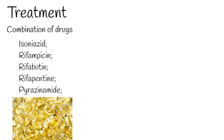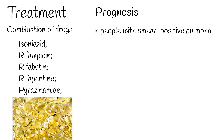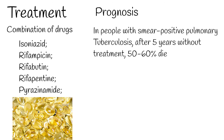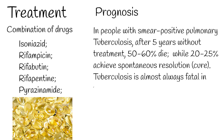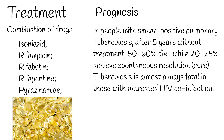Prognosis: In people with smear-positive pulmonary tuberculosis, after 5 years without treatment, 50–60% die, while 20–25% achieve spontaneous resolution or cure. Tuberculosis is almost always fatal in those with untreated HIV co-infection.